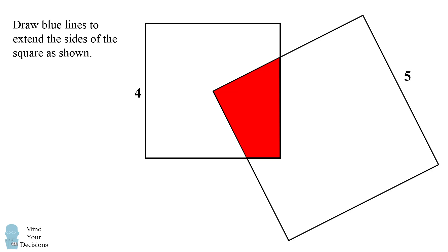Next, we'll draw blue lines to extend the sides of the square as shown. What does this do? Notice the square with a side length of 4 is now divided into 4 identical shapes, each with an area equal to the red shape.